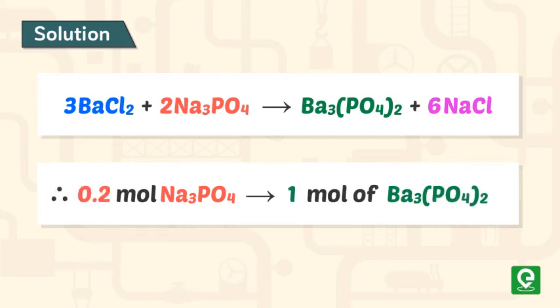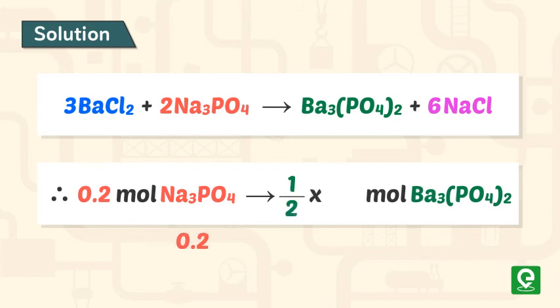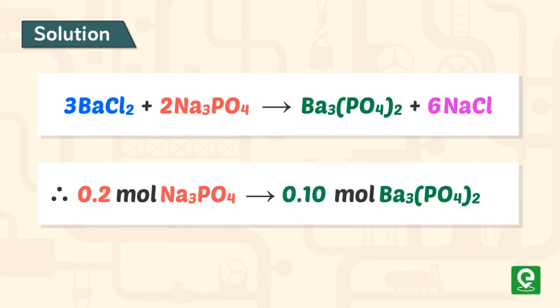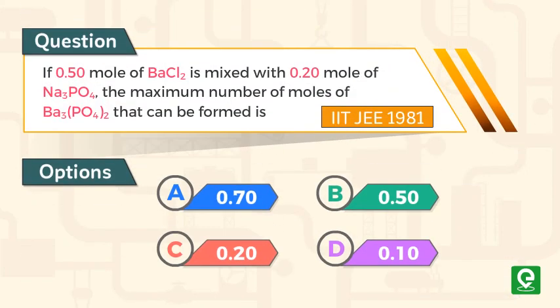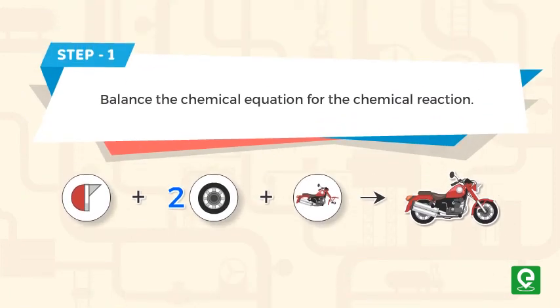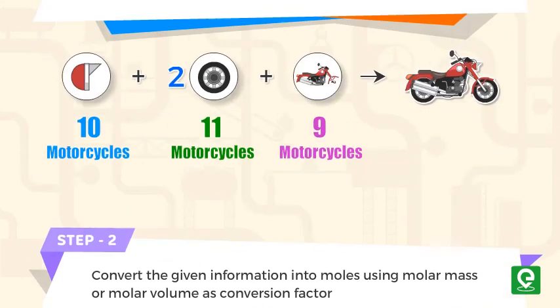Therefore, 0.20 mole of Na₃PO₄ will give (1/2 × 0.20) = 0.10 mole of Ba₃(PO₄)₂. Hence, option D is the correct answer. This concludes our video on limiting reagents. Students must remember the steps for determining the limiting reagent and apply them to solve similar problems.